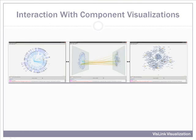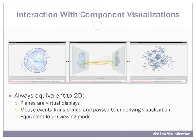Interacting with component visualizations is always equivalent to 2D. Mouse events are translated into plane relative coordinates, so the underlying visualization can interpret them the same as if the visualization was not being used within VisLink. Also, visualization planes may be swung forward to an equivalent 2D view.